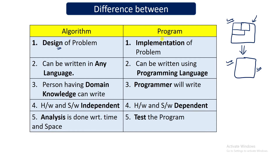Program can be done in any programming language you know. Algorithm can also be written in any language. Now the third difference: the person writing the algorithm should have some domain knowledge. For example, if you are writing an algorithm for an aircraft radar system, you should know about velocity, displacement, directions, longitude, and latitude — so you can use that domain knowledge while giving the solution. The programmer who implements the algorithm should also have domain knowledge.